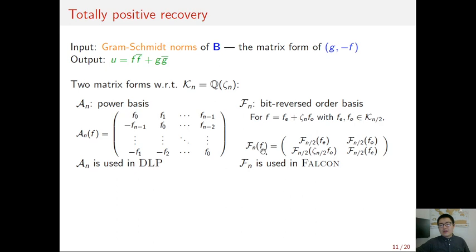And the second matrix form is built recursively. It identifies f as a 2×2 block matrix, and each block corresponds to a subfield element. And this matrix form actually corresponds to a power basis in a bit-reverse order. And it is well compatible with FFT and the tower-of-ring structure. It is used in FALCON.